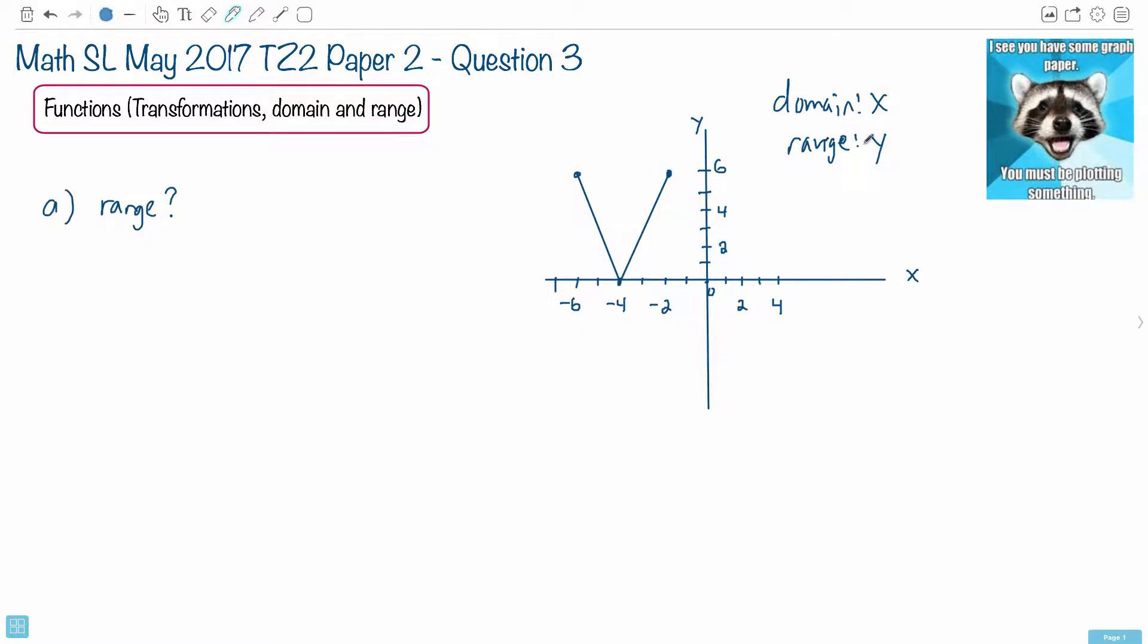If we want the range, we're looking at where your y values can exist. Take a look at this, sort of scan and say, if you understand about range, it just says where can the y values be? You can find them as high as 6, and you can find them as low as 0. So you need to say between 0 and 6.